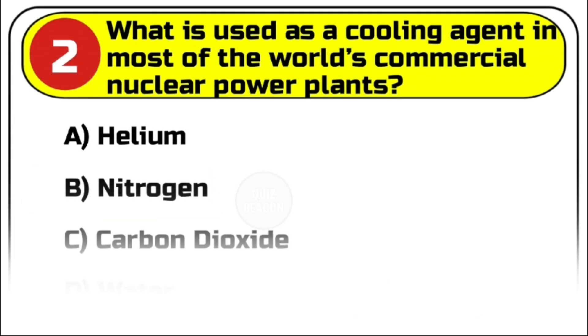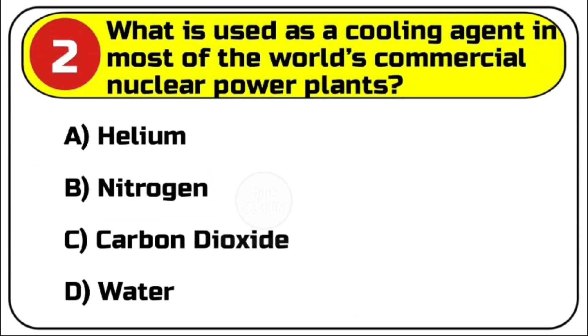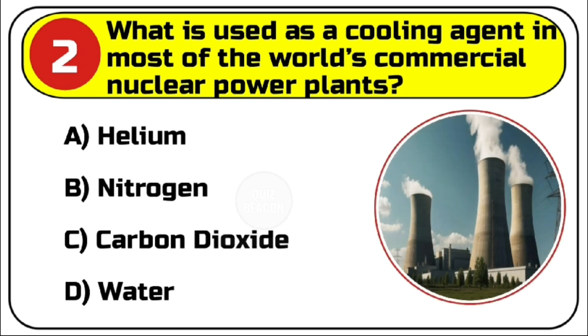Question number 2. What is used as a cooling agent in most of the world's commercial nuclear power plants? Options are A. Helium. B. Nitrogen. C. Carbon Dioxide. D. Water.